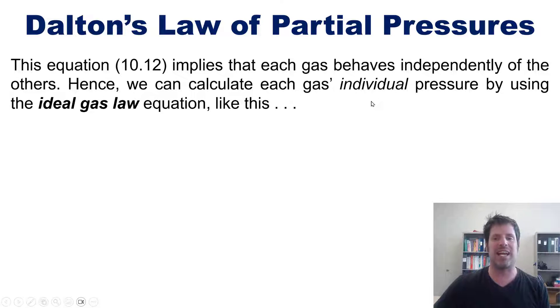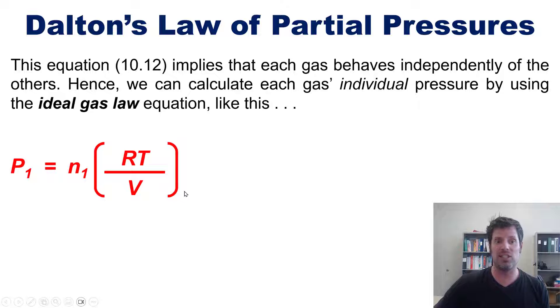Thus we can calculate each gas's individual pressure by using the ideal gas law equation like this. We rearrange the ideal gas law PV equals NRT for each individual gas to solve for P. Thus gas 1's individual pressure P1 would be equal to that gas's number of moles N1 multiplied by RT divided by V.